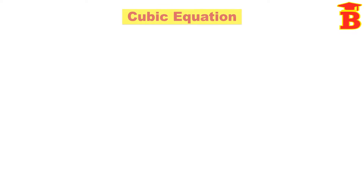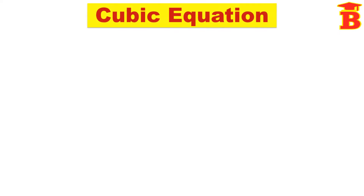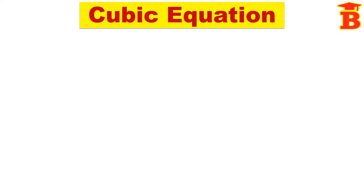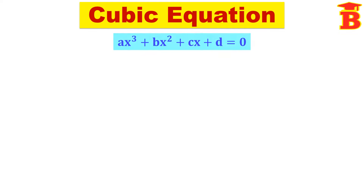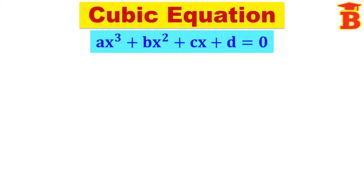Welcome to our channel Bright Mass. Let us learn how to form a cubic equation. The general form of the cubic equation is Ax cubed plus Bx squared plus Cx plus D equal to 0.